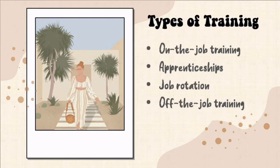Let us discuss the four types of training. The first one is on-the-job training — also known as OJT, which we are all certainly familiar with. It is teaching the skills, knowledge, and competencies that are needed for employees to perform a specific job within the workplace and work environment.